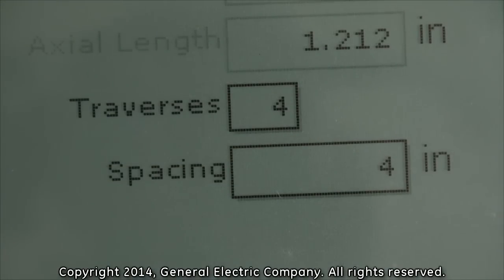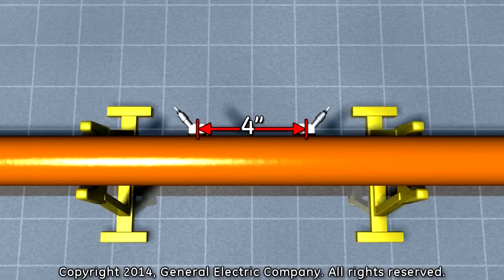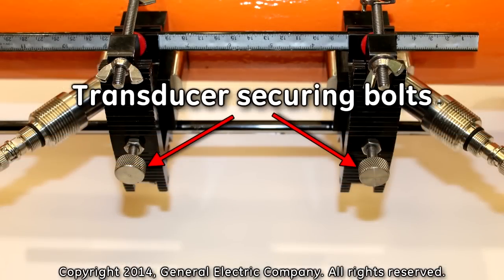The number of traverses is 4, which means you will place the transducers on the same side of the pipe, and the spacing is 4 inches, which means you will place the transducers 4 inches apart from the center of each transducer securing bolt.